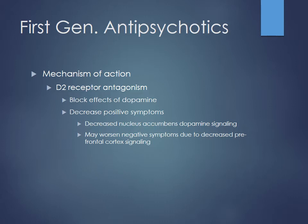First-generation antipsychotics are also called typical antipsychotics. Their mechanism of action is primarily blocking D2 receptors — dopamine type-2 receptors — making them competitive antagonists. They are very effective at decreasing the positive symptoms of schizophrenia. They primarily work in the nucleus accumbens, where there is already too much dopamine activity occurring.